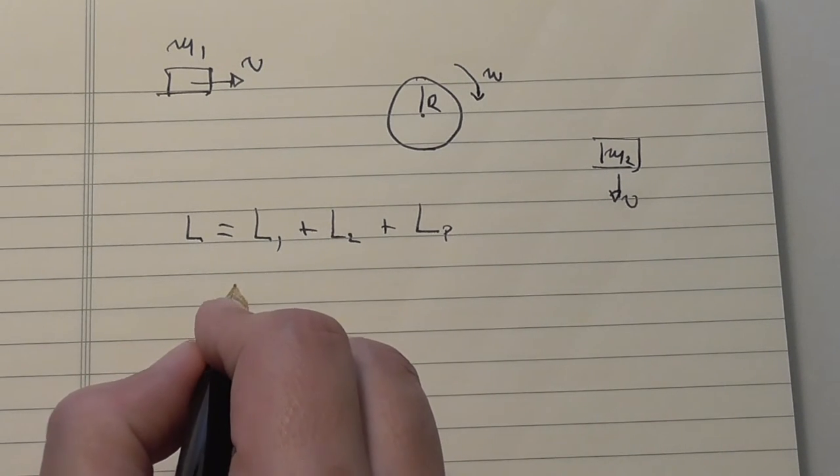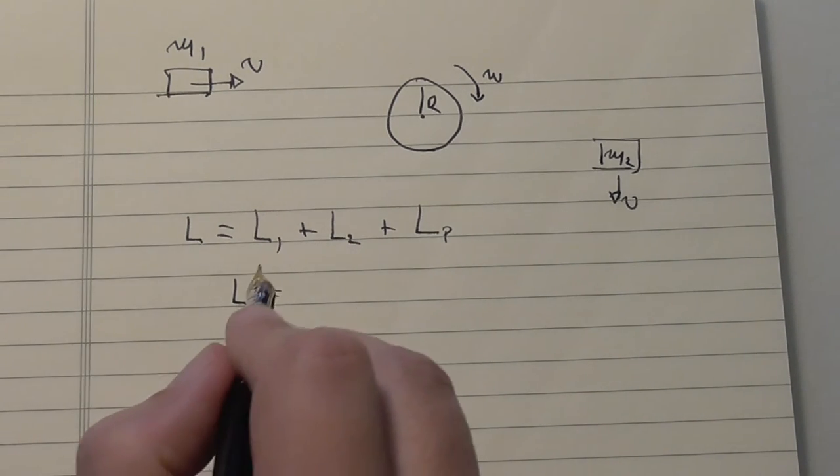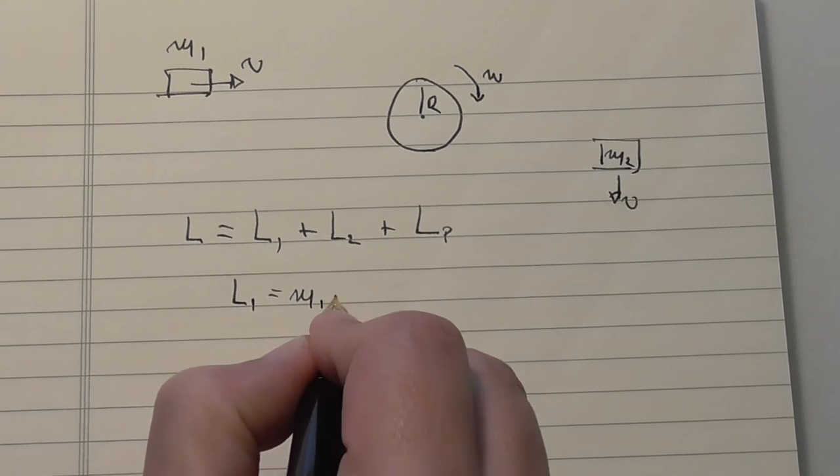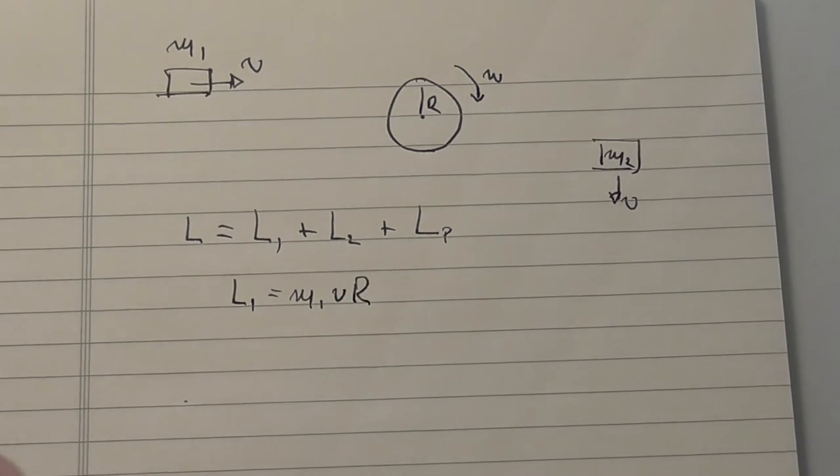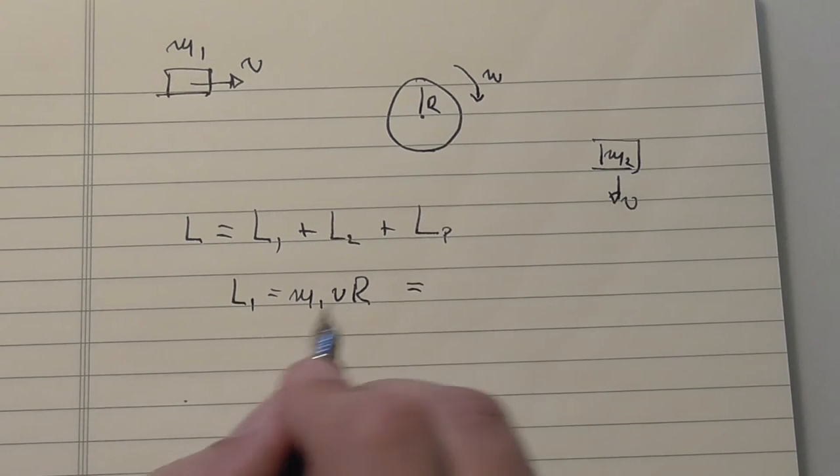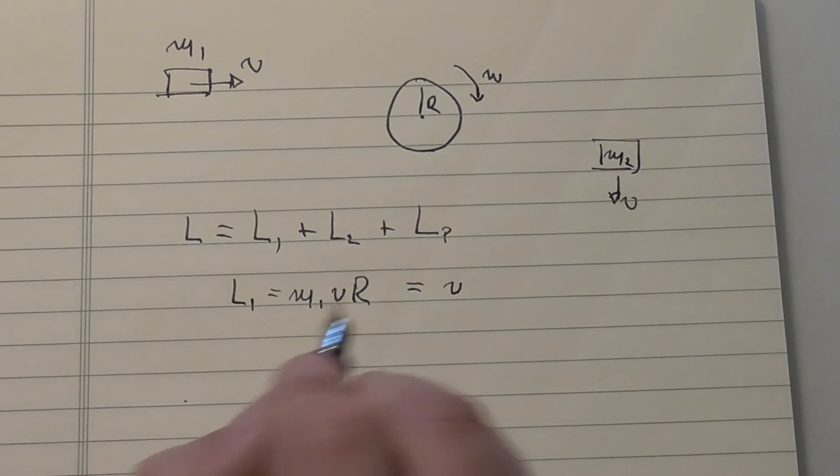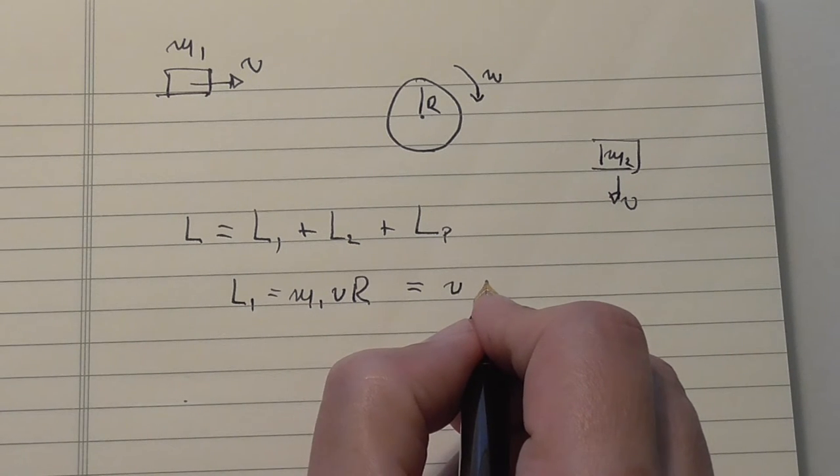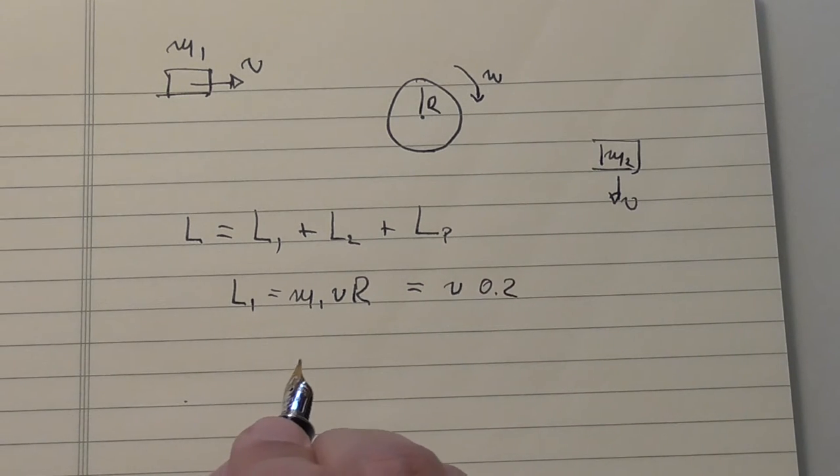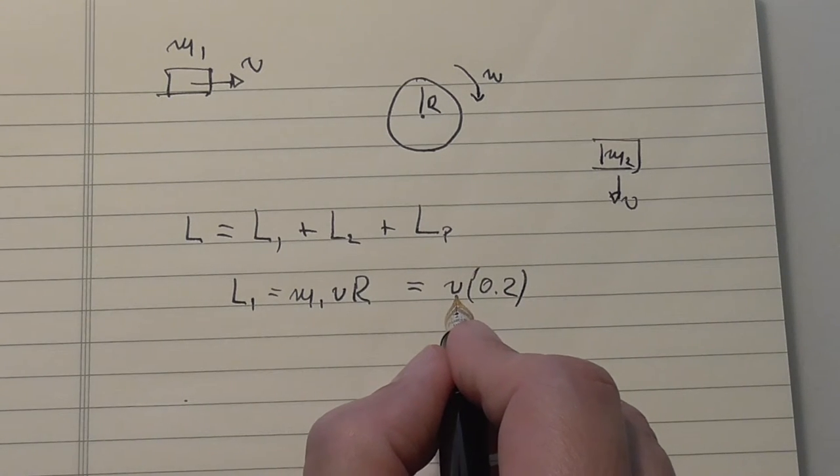What is the angular momentum of the first mass? This is simply m1 times v times r, because we consider this now as a point mass. So this is m1 was 1, v, and r is 0.2, we have to convert this to meters, it was 20 centimeters. And now the question is, what is the speed v?